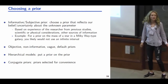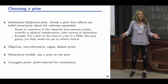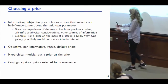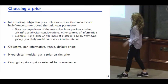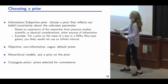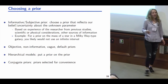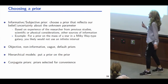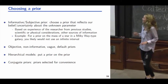There are several ways of choosing priors. One is informative or subjective priors — taking your expertise in a field and expressing your current belief about the uncertainty in the parameter space. There are also objective non-informative, vague, or default priors. With hierarchical models you can put priors on your priors — hyper priors. And there are conjugate priors, which are priors selected for mathematical convenience.